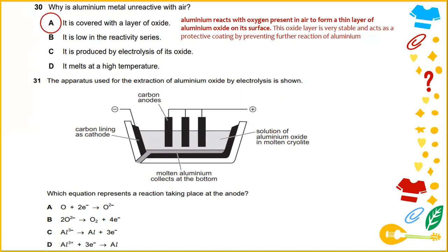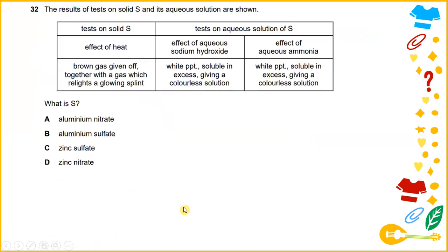The apparatus used for the extraction of aluminum oxide by electrolysis is shown. Which equation represents the reaction taking place at the anode? The answer would be B.